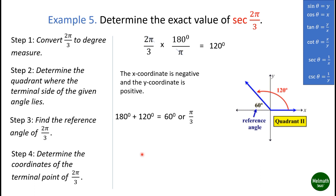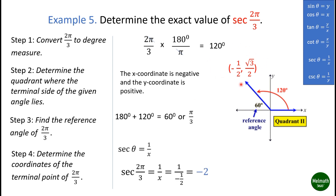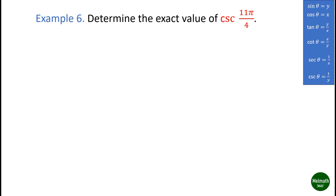Determine the coordinates of the terminal point of 2π/3. Secant θ = 1/x. The point at 2π/3 is (-1/2, √3/2). Therefore secant(2π/3) = 1/(-1/2) = -2.